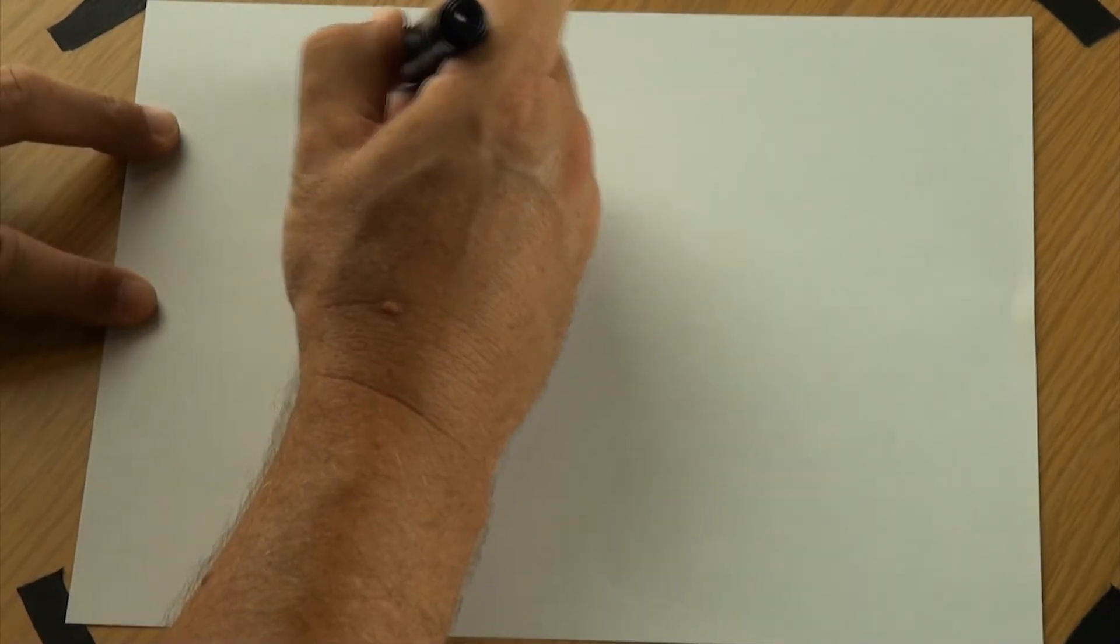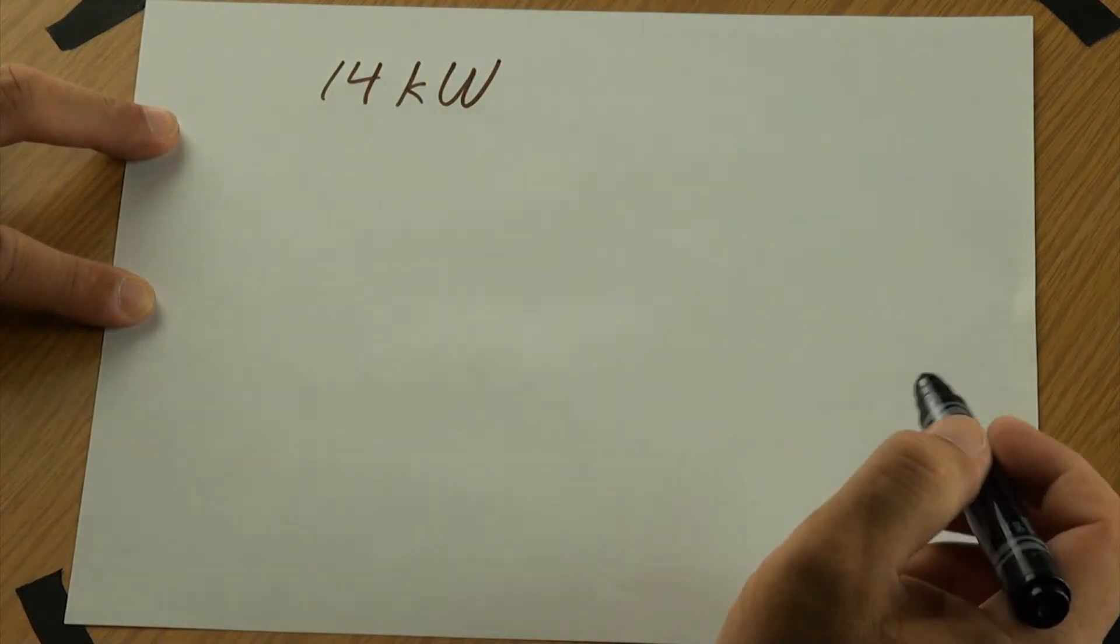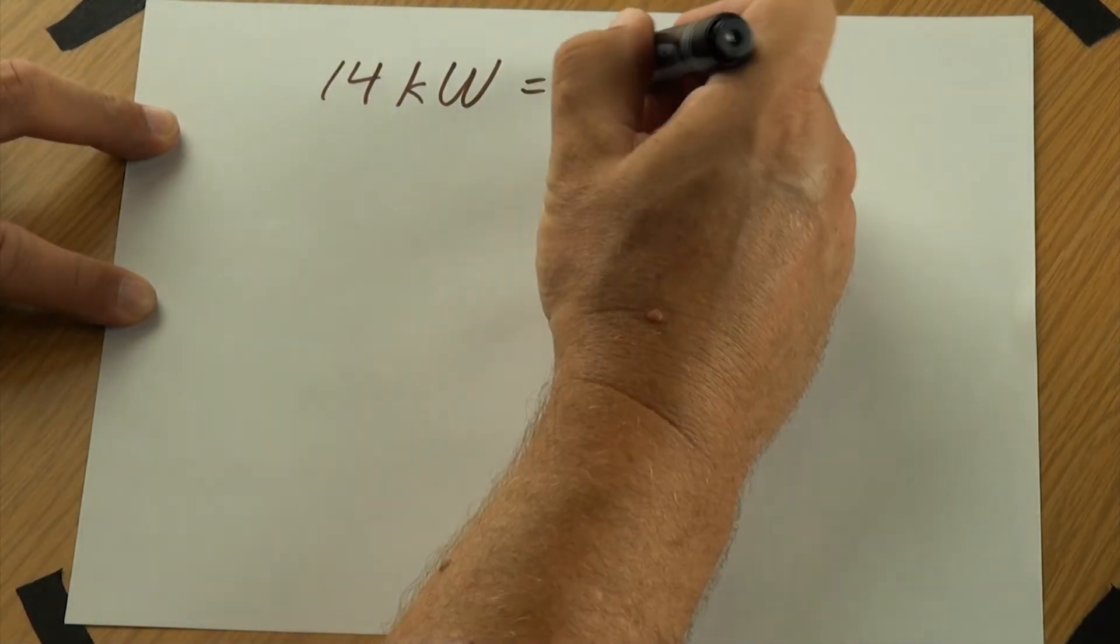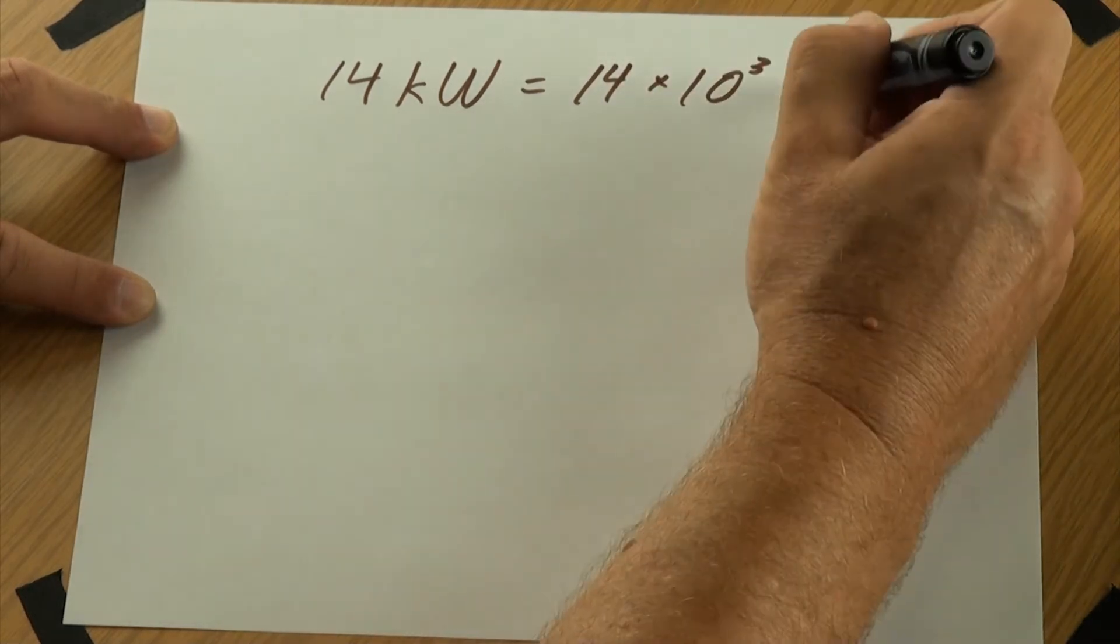The other thing that we want to remember, because we could run into this as we're looking at some problems, not always will we see it this way, but another way of writing these sorts of things is that 14 kilowatts, that example we were looking at just a moment ago, that could be written as 14 times 10 to the third power watts.